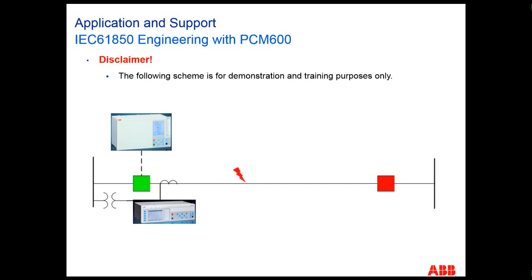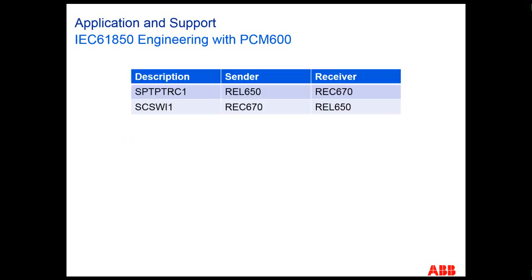On the event of a fault, the tripping signal is going to be published and this information received by the REC670 relay. The REC670 relay is in charge of publishing the circuit breaker position; therefore, it is going to change from a circuit breaker position closed to an open position. To summarize, the SPTPTRC1 is going to be published by the REL650 and received by the REC670. The second, breaker position SCSWI1, is going to be published by the REC670 and received by the REL650.